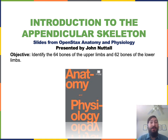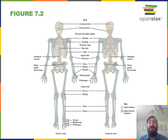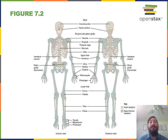In this video I will identify the 64 bones of the upper limbs and the 62 bones of the lower limbs. The appendicular skeleton, shown in green in this illustration, refers to the bones found within the limbs as well as the girdles that attach the limbs to the axial skeleton.